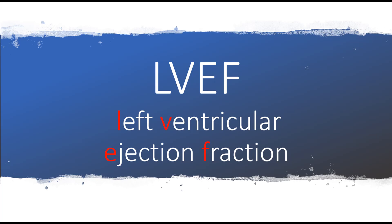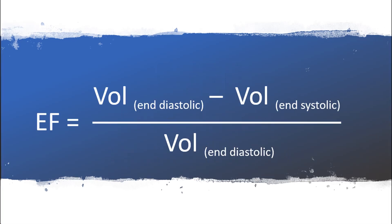EF, or ejection fraction, is basically the difference between the post-pump and pre-pump amount of blood. The exact formula for EF is: end-diastolic volume minus end-systolic volume, over end-diastolic volume.